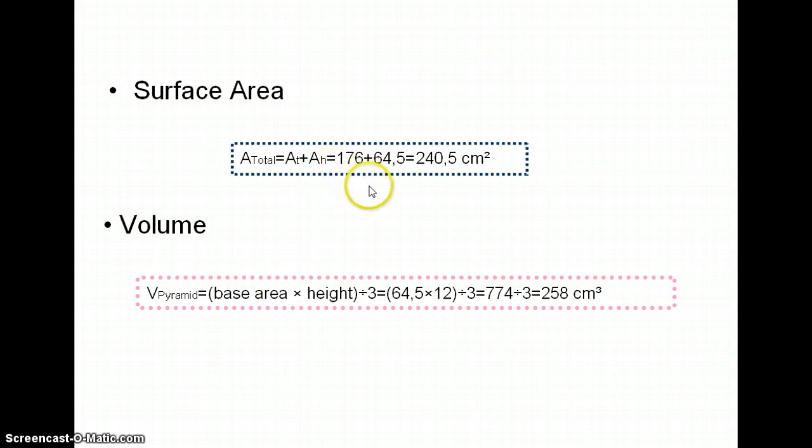This is the same as 176 plus 64.5, equals 240.5 square centimeters. So now finally to determine the volume, we must use this formula: (base area times height) divided by three. So this is the same as (64.5 times 12) divided by three, so the volume equals 258 cubic centimeters.